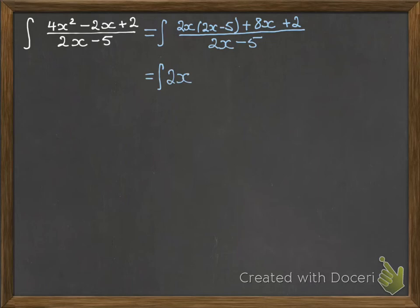So that helps us get the 2x out, because if we cancel that 2x minus 5 with the 2x minus 5 on the bottom, we'll be left with just the 2x. But we've still got 8x plus 2 over 2x minus 5 to deal with. So if we take out the 2x minus 5 again,